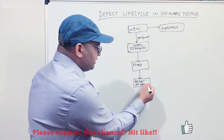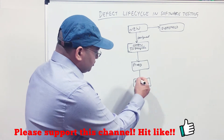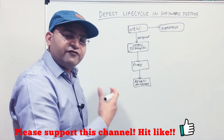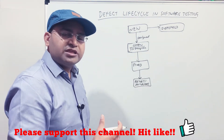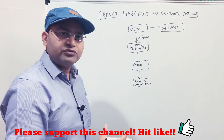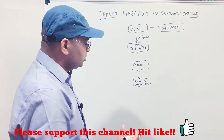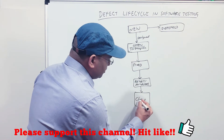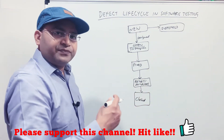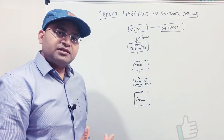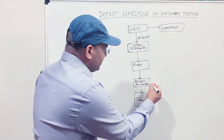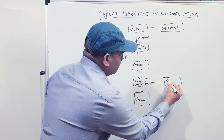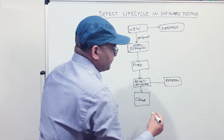These statuses are customizable based on your project needs and how the organization wants to use the terms. Once the defect is in Retesting or In Testing and you verify it — if the functionality is working fine and there are no more issues — you close the defect, and the last state is Closed.